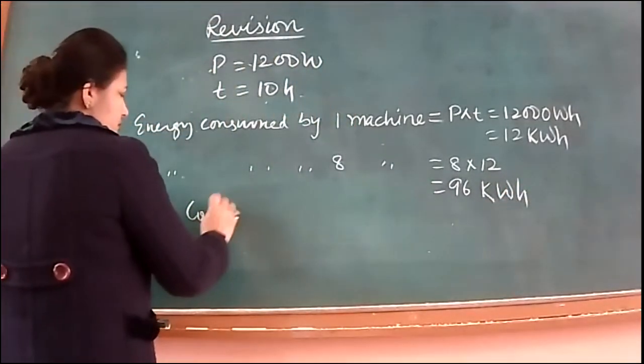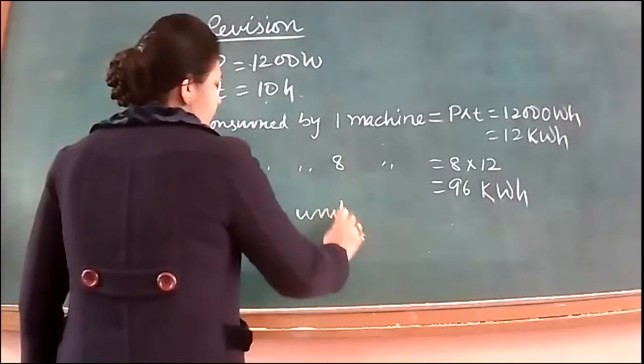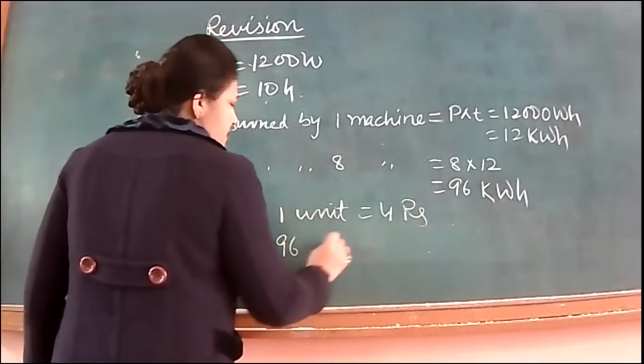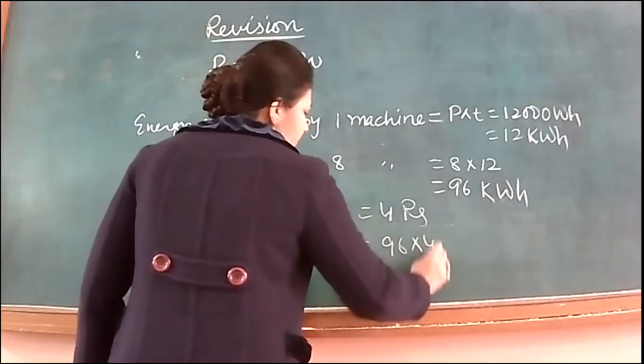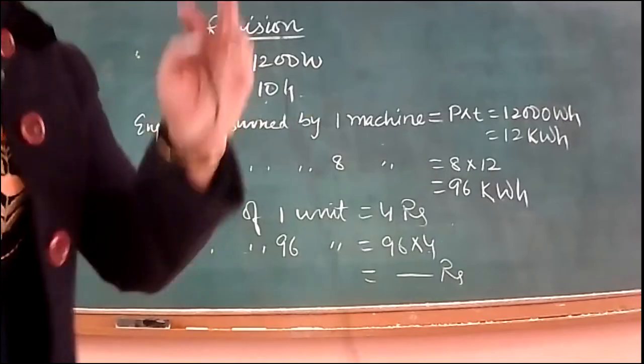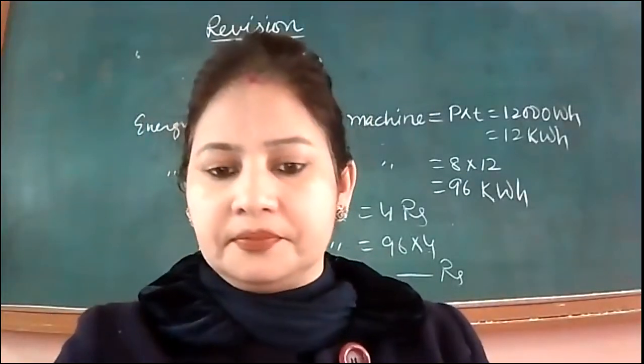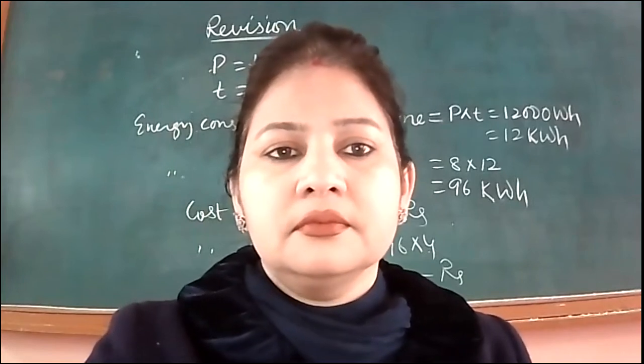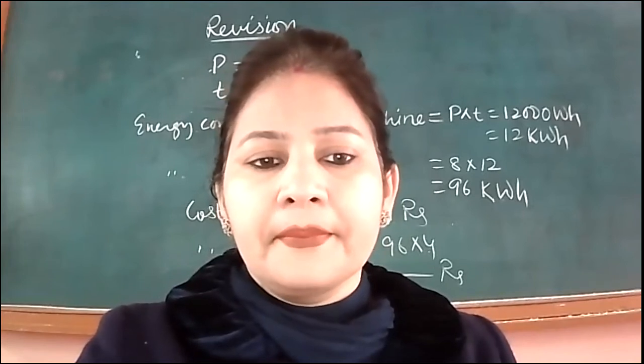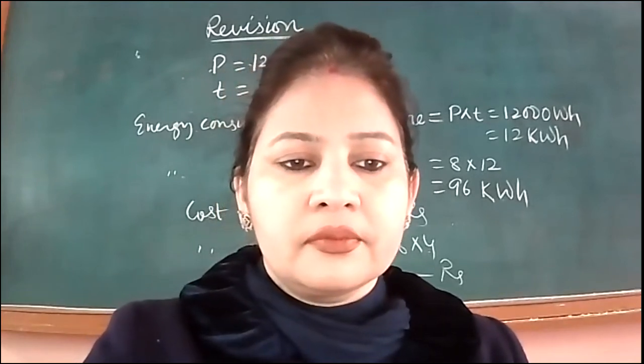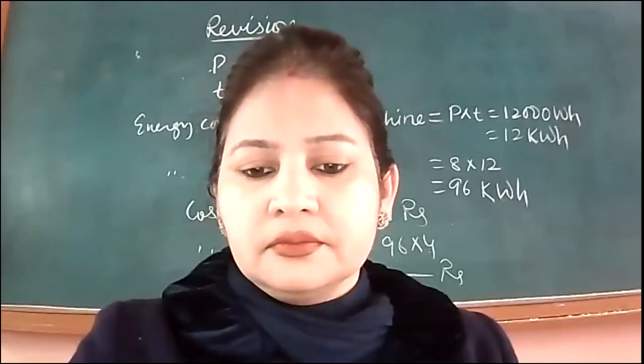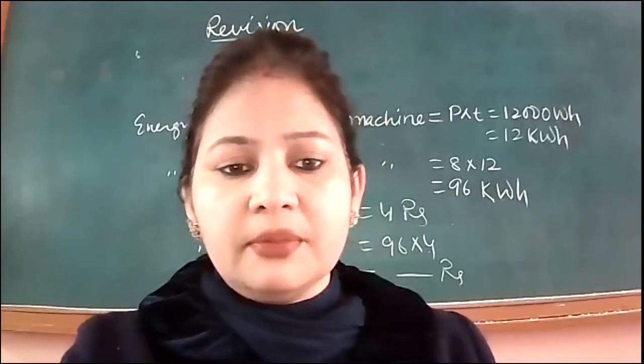Now, cost of one unit is rupees 4. So what is the cost of 96 units? 96 multiplied by 4. So this is the answer. Yes Karanveer, what's your answer? Karanveer, kya answer hai? Karanveer, you raised hand. Then rupees 384. Rupees 384. You did by the same method? So have you multiplied 96 and 4? Yes ma'am.